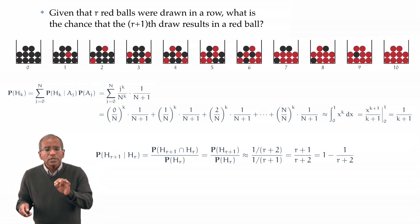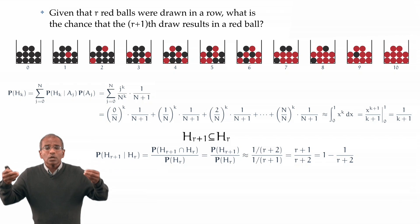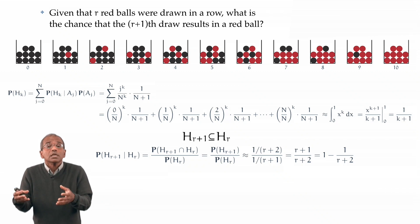And the key here is to observe that the events Hr and Hr plus 1 stand in a particular relation. Hr plus 1 means that r plus 1 red balls have been observed. But if r plus 1 red balls were drawn, then manifestly it is true that r red balls must have been drawn prior to that. And therefore, the event Hr plus 1 will imply the occurrence of the event Hr. From a set theoretic perspective, the event Hr plus 1 is a subset of Hr. And therefore, the intersection of the two results in the smaller of the two sets. In other words, simply Hr plus 1.